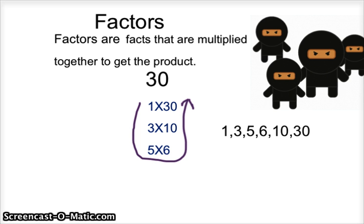So the factors of 30 are 1, 3, 5, 6, 10, and 30. The ninjas are for chopping up the product, which is 30, which we did.